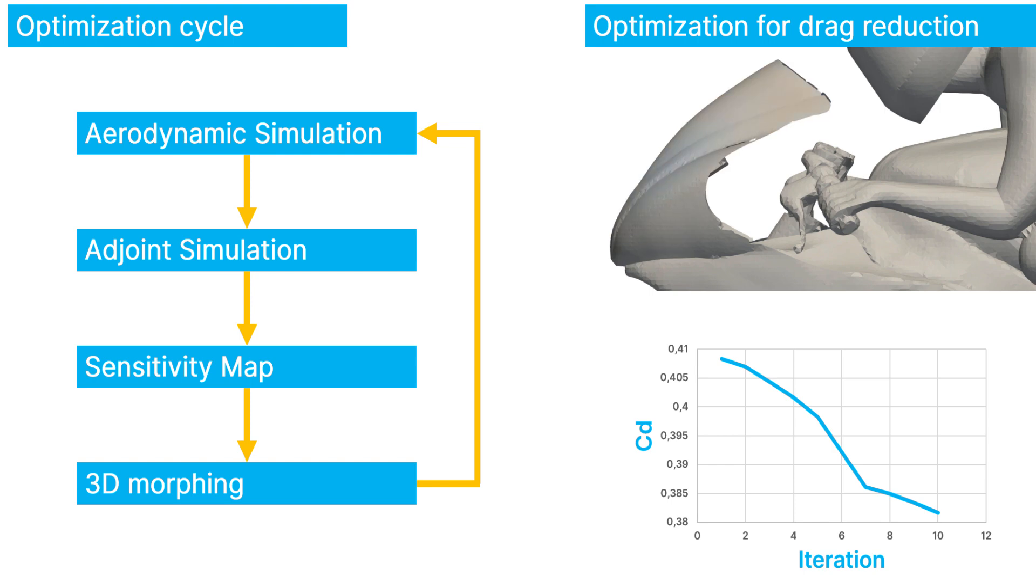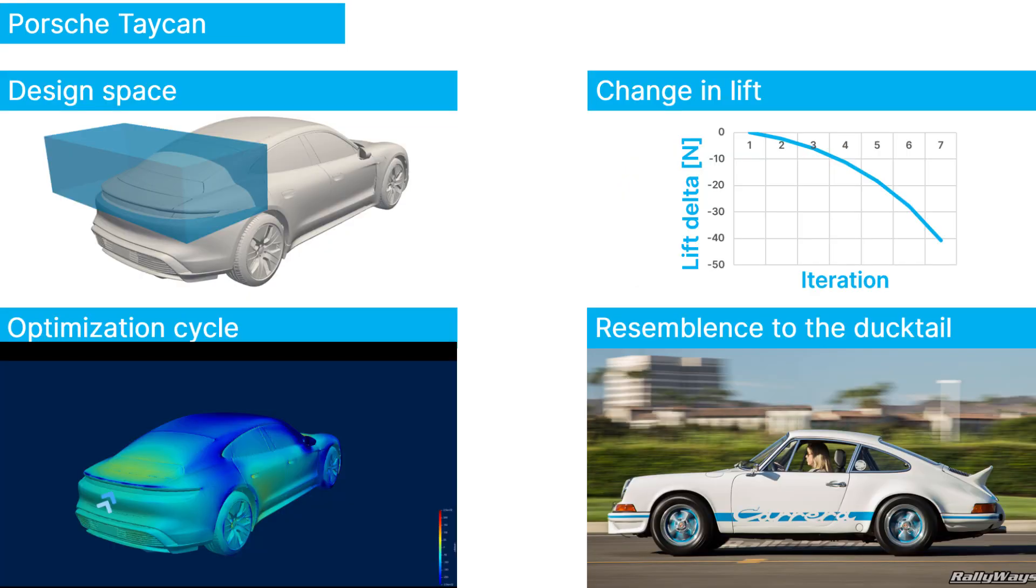You can do this on the entire object or you can constrain it to what is called a design space, which is typically a box in which the algorithm is allowed to play or morph the 3D model. Now let's get back to the Porsche Taycan. Imagine we want more downforce at the rear of the car. In that case, we could create a design box around the rear boot of the car and constrain the algorithm to only work in that region. Interestingly enough, after a number of cycles, the adjoint optimization technique starts morphing the car into what is called a ducktail spoiler, which is an iconic shape that Porsche has been applying for decades.